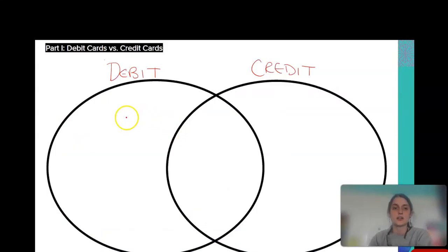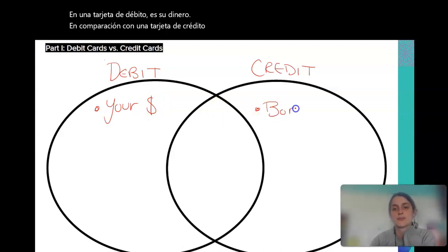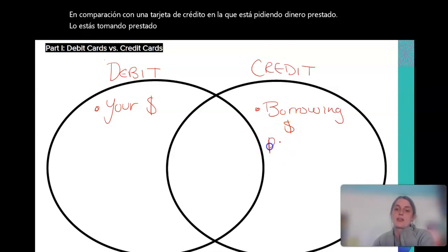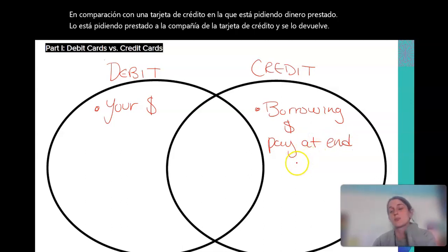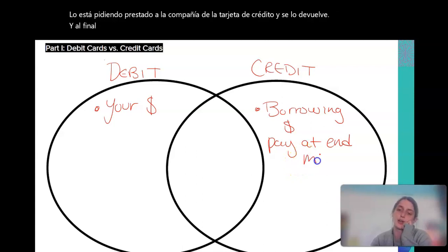On a debit card, it is your money versus a credit card where you're borrowing money. You're borrowing it from the credit card company and you pay them back at the end of your billing cycle, which is usually at the end of a month.